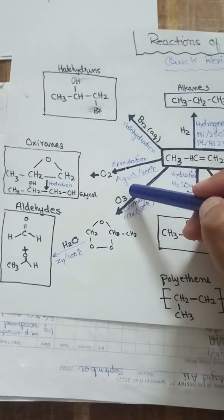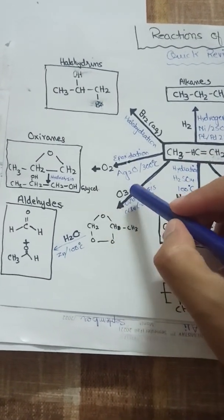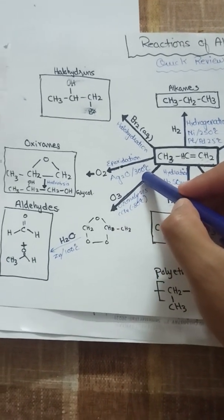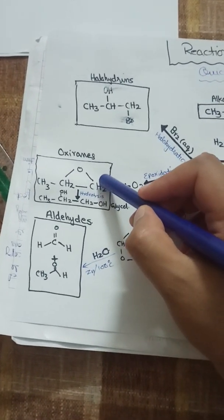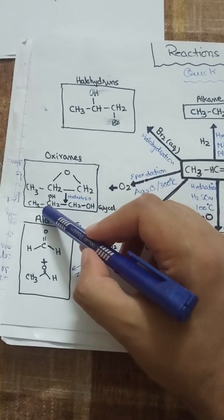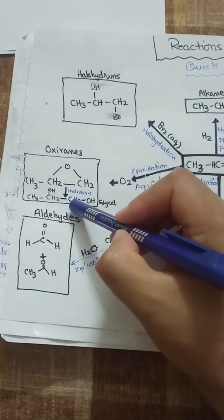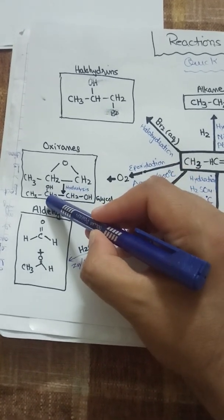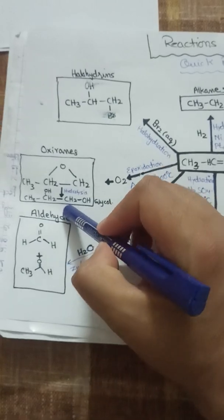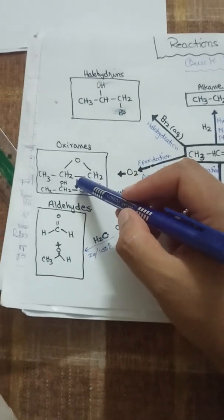The next reaction is epoxidation, which is the addition of oxygen. This reaction occurs in the presence of silver oxide as a catalyst at 300°C, and we get oxiranes or cyclic ethers. Cyclic ethers upon hydrolysis produce glycols — compounds in which two hydroxyl groups are present on adjacent carbons. Here we get 1,2-dihydroxypropane, which is propylene glycol.